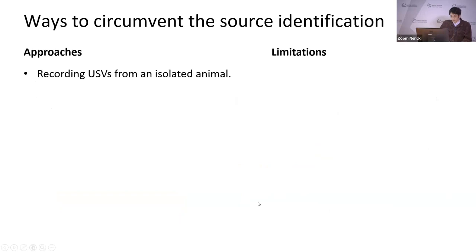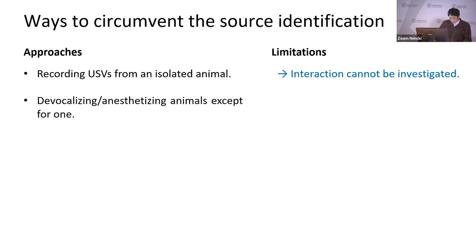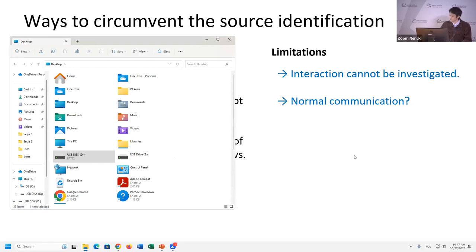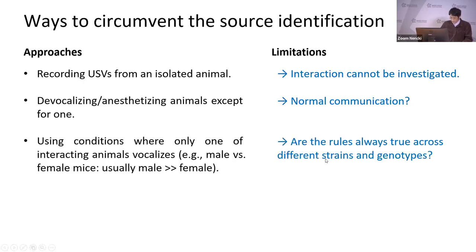One approach is recording USVs from an isolated animal — then we don't need to worry about the source. However, in such situations, the interaction of animals with USVs cannot be studied. Another approach is devocalizing or anesthetizing animals except for one in a group, but there is the question whether the interactions we observe are normal. Another approach is observing situations where only one of the interacting animals mostly vocalizes, but such rules may not be guaranteed across different strains and genotypes.